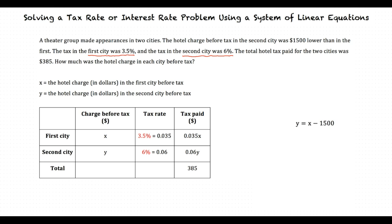The other information that the problem gave us about our two variables is that the total tax paid equals $385. We can use this information and what we know about the total tax paid on the two hotels to create the linear equation. 0.035X plus 0.06Y is equal to $385.